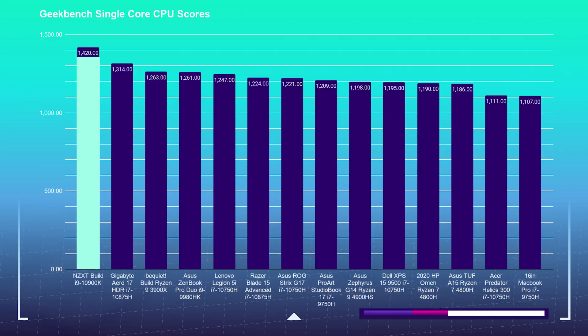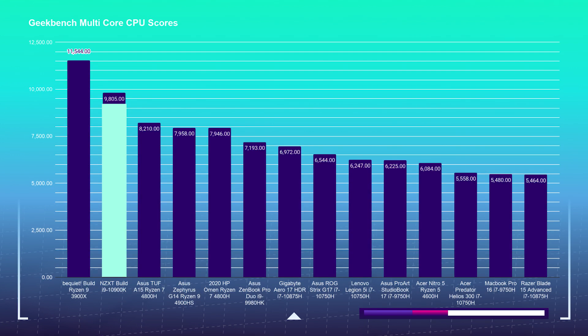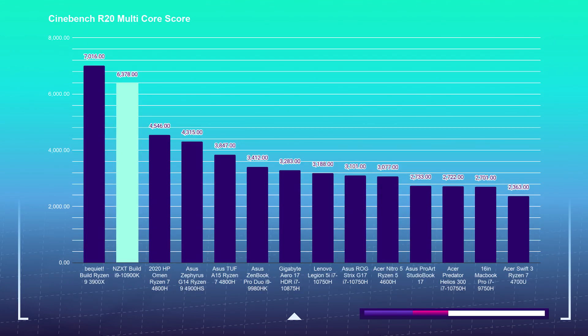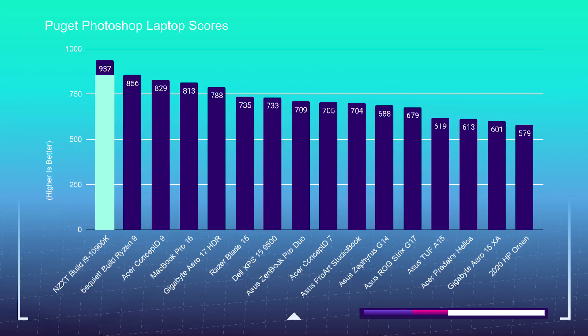On the Geekbench 5 single-core performance, the Intel build came out guns blazing with a score of 1,420, topping my charts for this test. In the multi-core benchmark, the 10900K scored 9,805 — a good bit behind the 3900X but well above the closest competition on my chart. On Cinebench R20, the 10900K build picked up 6,378, placing it in second place on my results. Now let's dive into the Puget Systems Photoshop benchmark — I use this to see how well a computer handles Adobe's design suite by testing it in Photoshop, the most system-intensive software in the suite. The 10900K and GTX 1660 Super combo scored a 937.